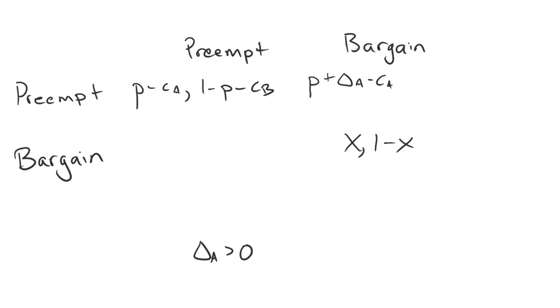So you can think about that as the extra probability that A gets towards its likelihood of winning if it strikes first. So P plus delta A now represents the total probability that A wins. B's payoff is going to also be different. It gets 1 minus P minus delta A minus CB.